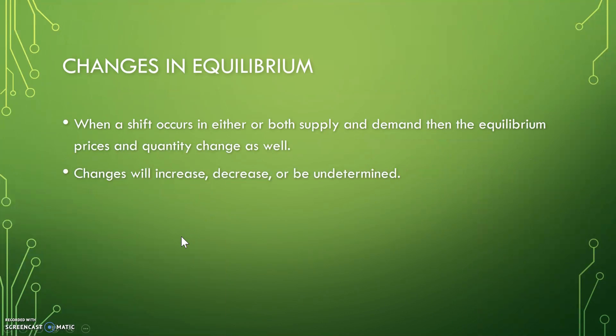Demand will increase because more buyers are willing and able to buy the good at a lower price. Changes in equilibrium: when a shift occurs in either or both supply and demand, the equilibrium price and quantity change as well. Changes will increase, decrease, or be undetermined.